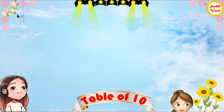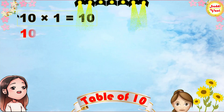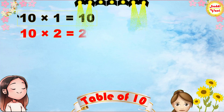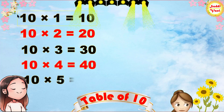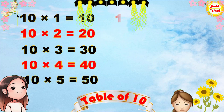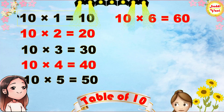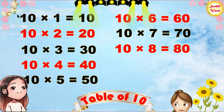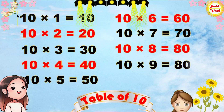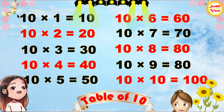Once again. 10 1's are 10, 10 2's are 20, 10 3's are 30, 10 4's are 40, 10 5's are 50, 10 6's are 60, 10 7's are 70, 10 8's are 80, 10 9's are 90, ten tens are a hundred.